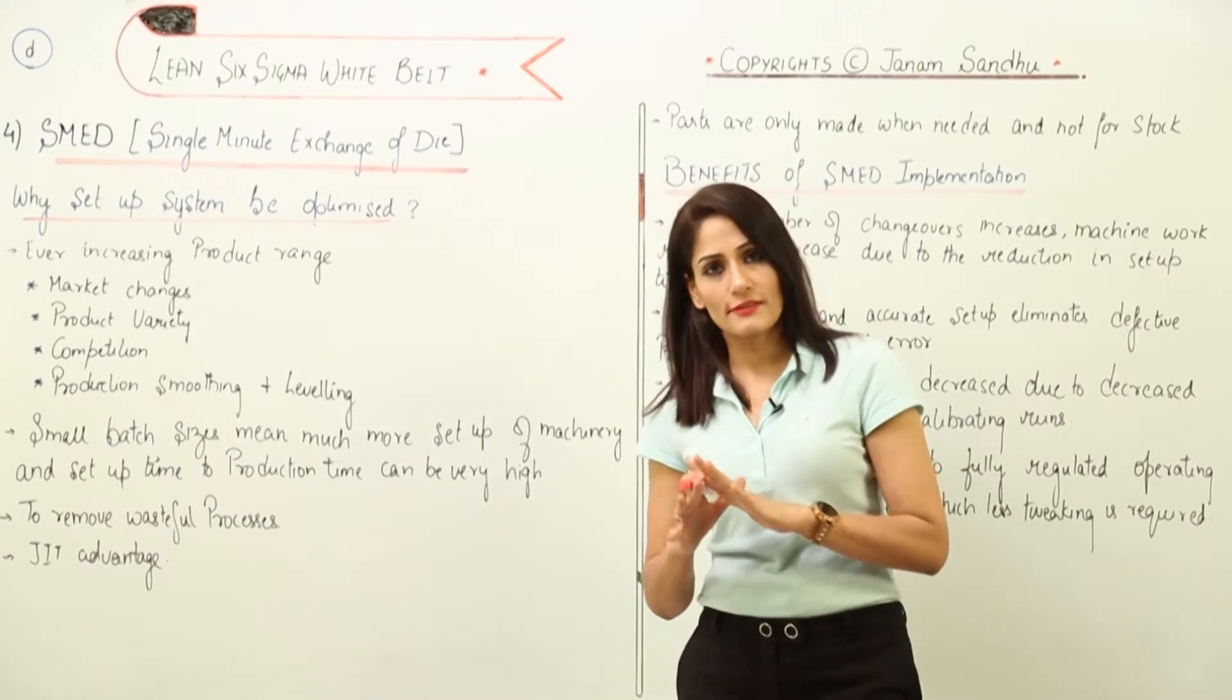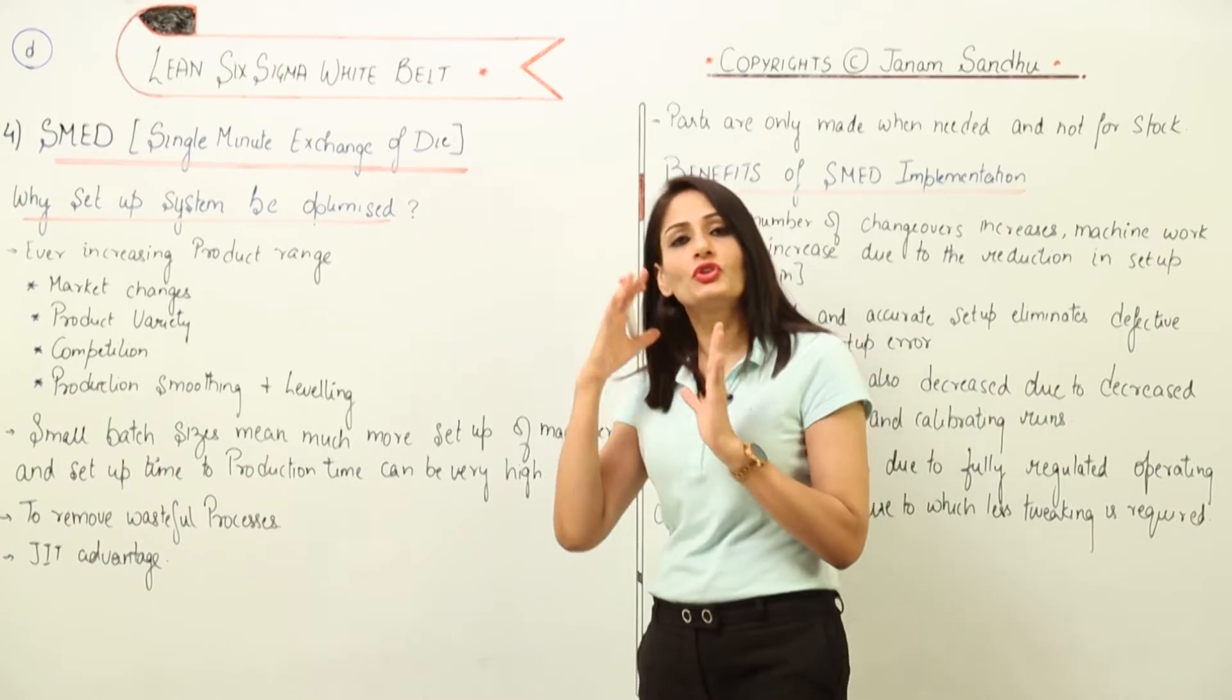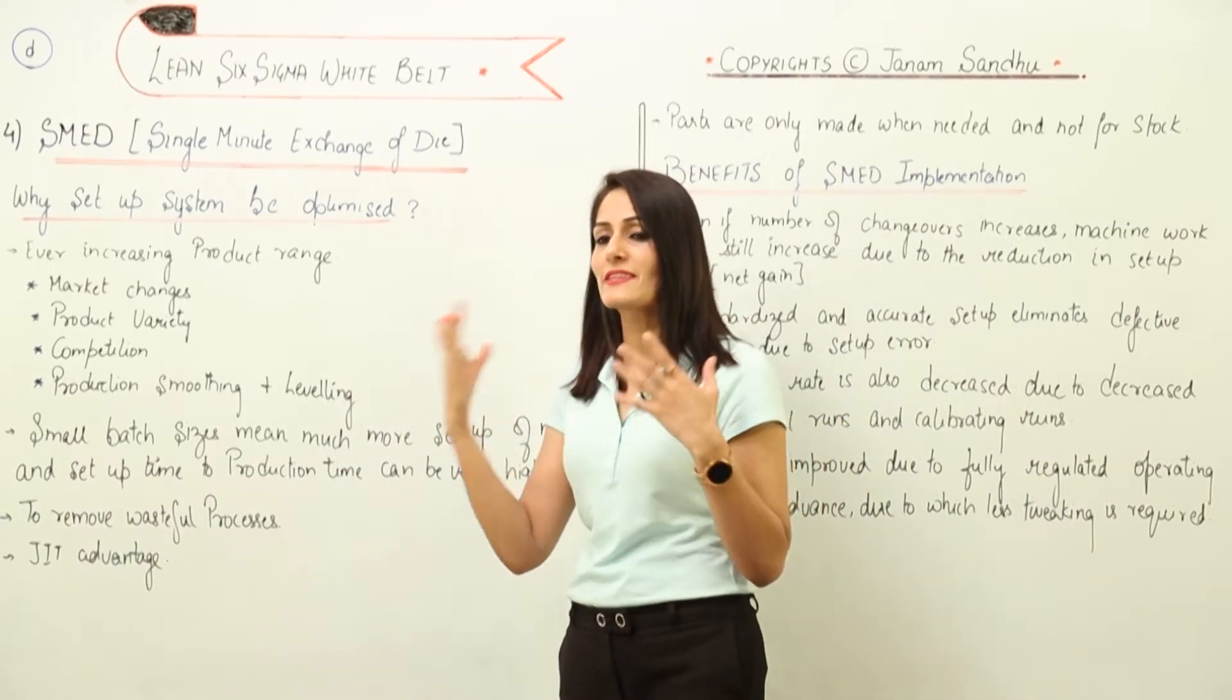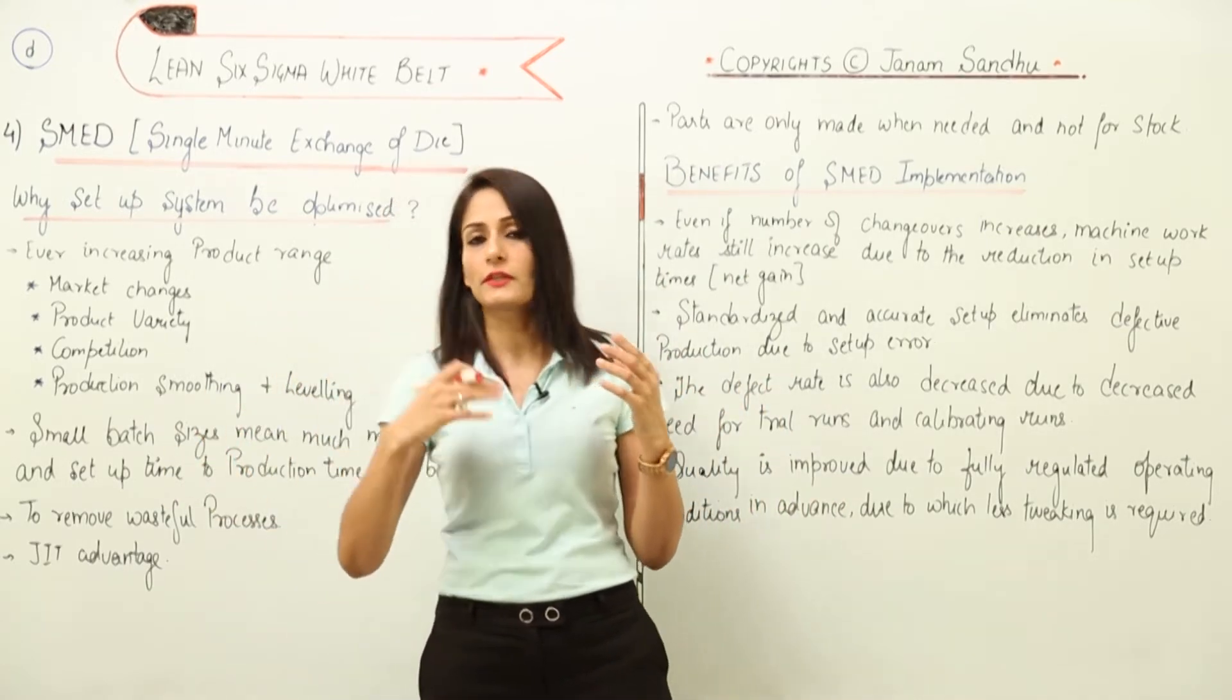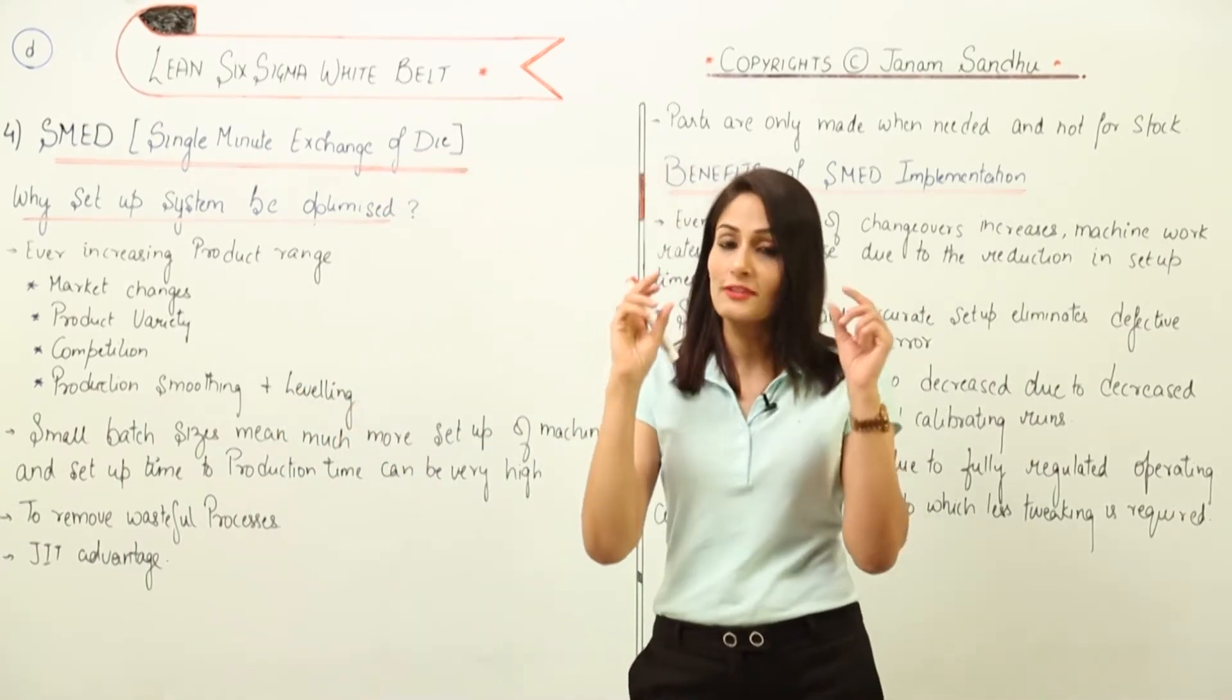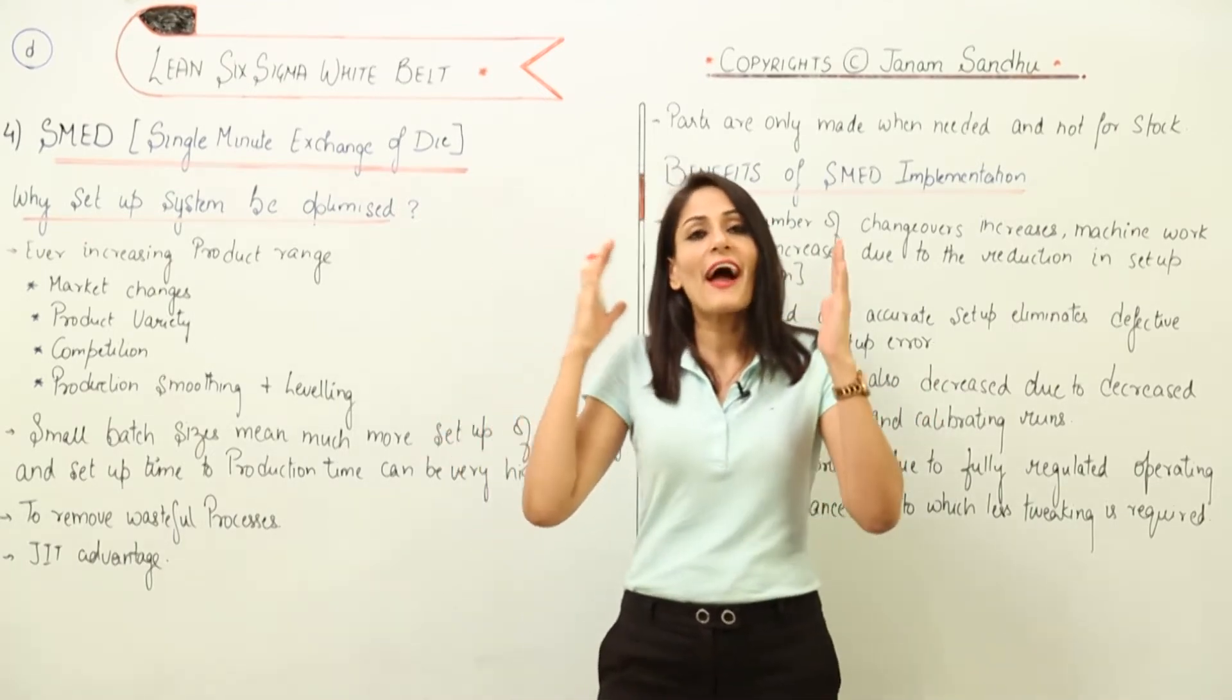Now let's understand why it's important to optimize our systems - why changeover time should be less. This is because of ever-increasing product range. Earlier when we talked about mass production or when factories started, customers didn't have much say. They were using whatever products factories were making. That was a revolution, but now those things won't work because customer demands are very precise, markets are changing, new products are being launched daily, and there's a lot of competition.